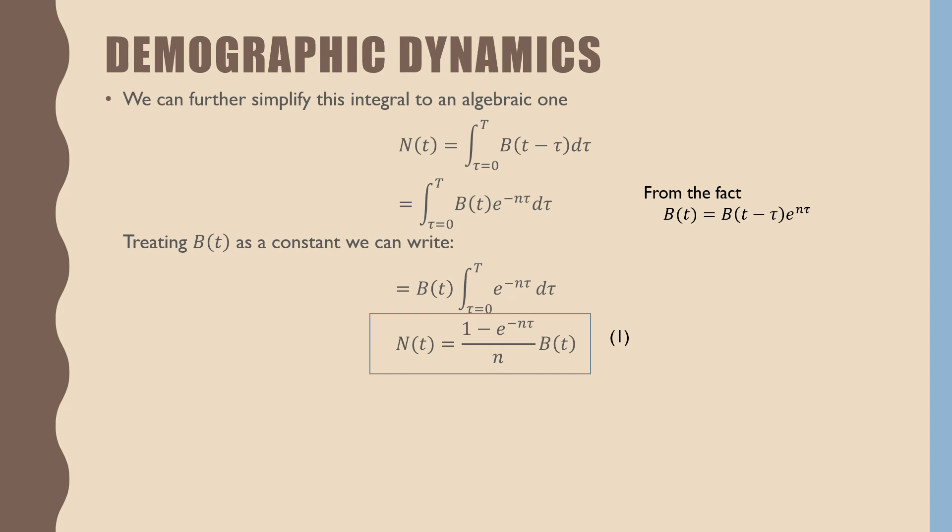If we are treating B(t) as a constant, we can further just pull it out of that integral and get this equation, which is N(t) equals 1 minus e raised to the power of negative nτ all over n times births at time t.